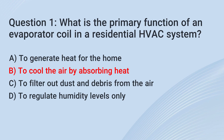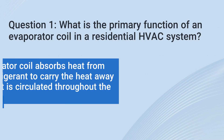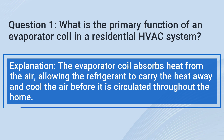The correct answer is b: To cool the air by absorbing heat. Explanation: The evaporator coil absorbs heat from the air, allowing the refrigerant to carry the heat away and cool the air before it is circulated throughout the home.